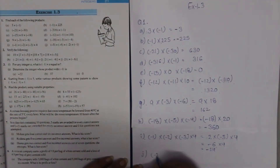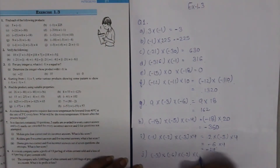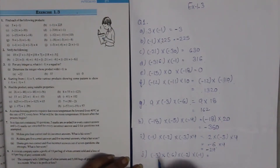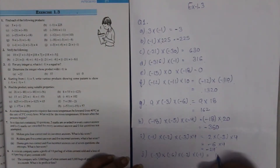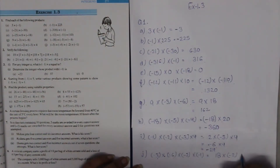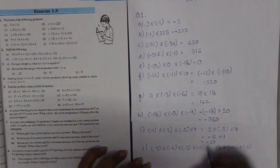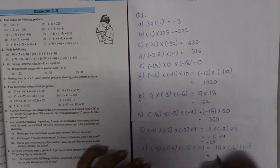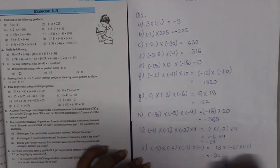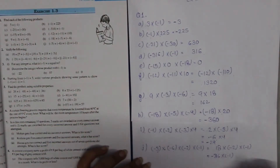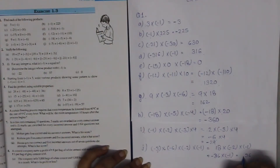Minus 3 multiplied by minus 6: negative times negative makes it positive. Then 18 multiplied by 2 is 36. Positive times negative makes it negative. Multiplied by minus 1: 36 ones are 36, and negative times negative makes it positive.